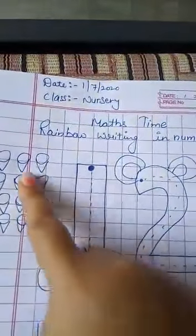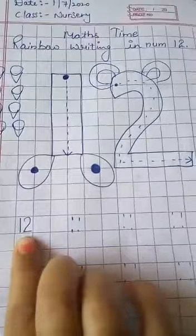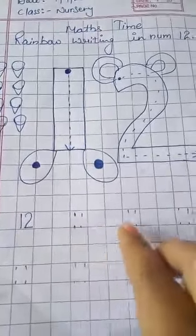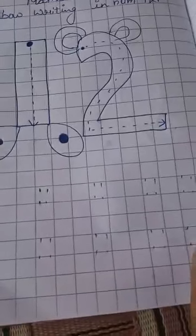How many ice creams are here? 12. It's 12. Now this one is number 12. You will write 1 to 12 on these dots.